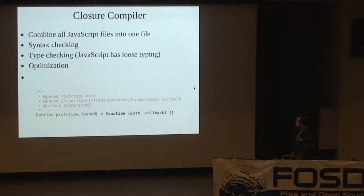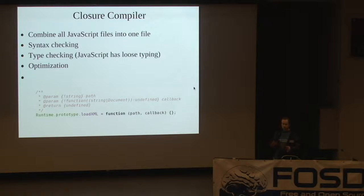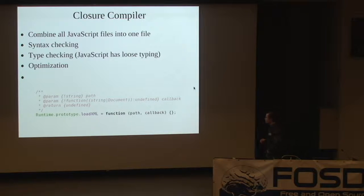Next in the list of tools is the Closure Compiler. It combines all your JavaScript files into one big file and optimizes it — that's not too critical here since the code isn't huge — but it also does syntax checking and type checking. So instead of waiting for your browser to give an error, you can already check on the command line. You set comments saying what type every argument to your code is, and even for callback functions you can specify what arguments they should receive. It's surprising how many type errors this will catch.